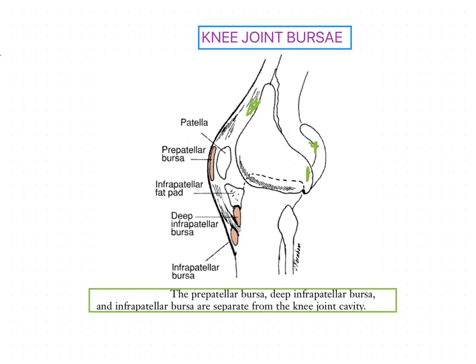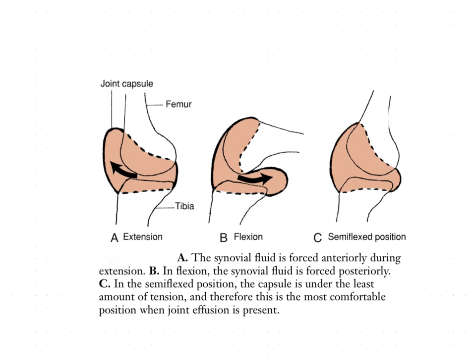The lubricating synovial fluid contained in the knee joint capsule moves from recesses to recesses — that means from foldings to foldings — during flexion and extension of the knee, which helps in lubricating the articulating surfaces. In extension, the posterior capsule and ligaments are taut and the gastrocnemius and subpopliteal bursae are compressed on the posterior aspect, which shifts the synovial fluid anteriorly.